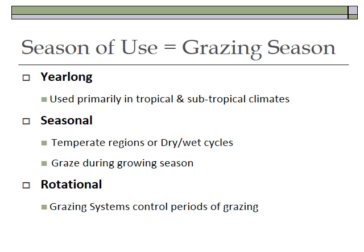Another distinction is between grazing season and growing season. Some systems are year-long, especially in the tropics and subtropics — animals are grazed all year out on the range. In seasonal climates like the temperate region, where winter, spring, and summer are very different, you would have a seasonal grazing pattern. In the tropics with distinct dry-wet cycles, there may not be much grazing during the dry cycle. Grazing during the growing season usually occurs in seasonal systems.